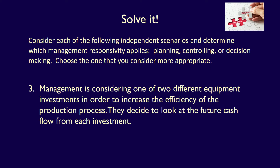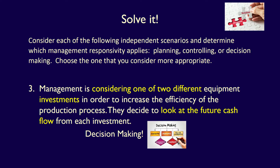Scenario 3: Management is considering one of two different equipment investments in order to increase the efficiency of the production process. They decide to look at the future cash flow for each investment. Management is considering two alternatives to increase efficiency using accounting information. That's decision-making.